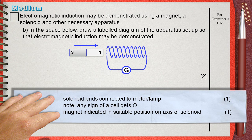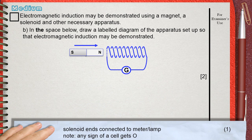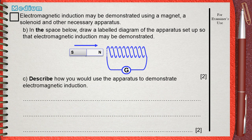So later it will be pushed inside the solenoid and withdrawn outside from it. Question C: Describe how you would use the apparatus to demonstrate electromagnetic induction.